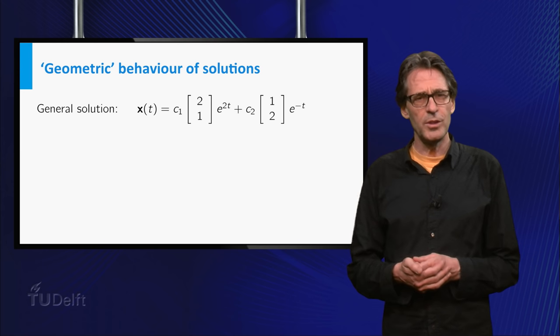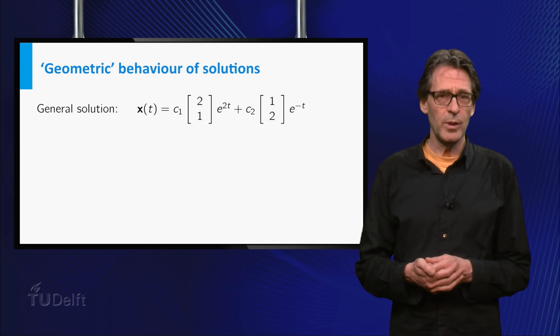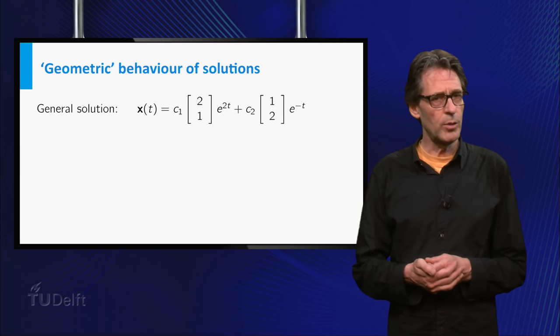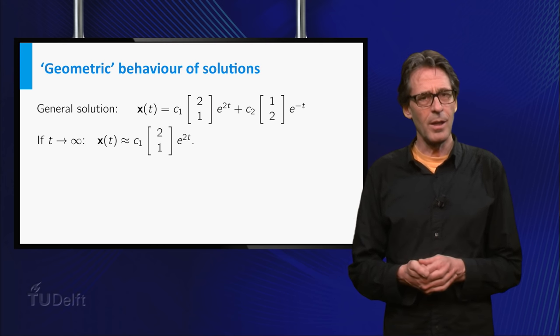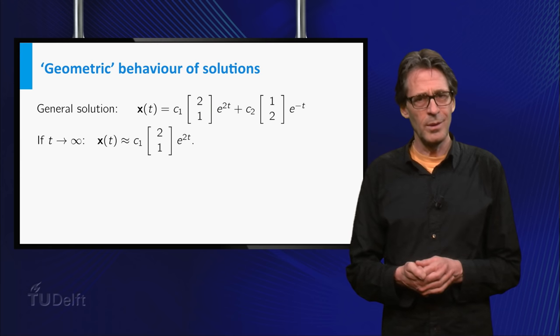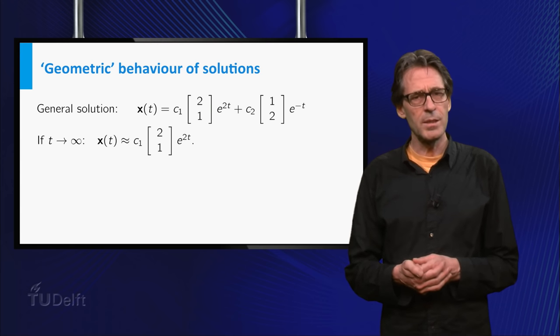If neither of the coefficients c₁, c₂ equals zero, then if t goes to infinity, the term with the negative exponent will die out, and the other term gets larger and larger. So the solution will go to infinity with the line generated by v₁, which is the eigenvector corresponding to the positive eigenvalue, as an asymptote.